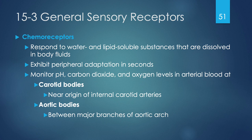Proprioceptors break into three groups: muscle spindles monitor skeletal muscle length and trigger stretch reflexes; Golgi tendon organs at the junction between skeletal muscle and tendon monitor tension during muscular contraction; and receptors in joint capsules are free nerve endings detecting pressure, tension, and movement at the joint. Chemoreceptors are specialized nerve cells sensing specific concentrations of specific compounds, responding to both water- and lipid-soluble substances. They exhibit peripheral adaptation within seconds and monitor pH, carbon dioxide, and oxygen levels of arterial blood in carotid bodies and aortic bodies.